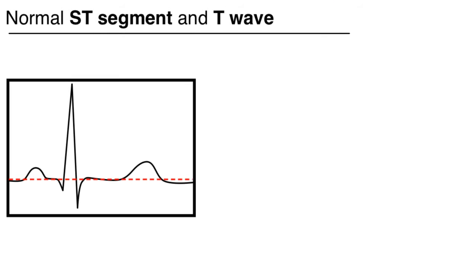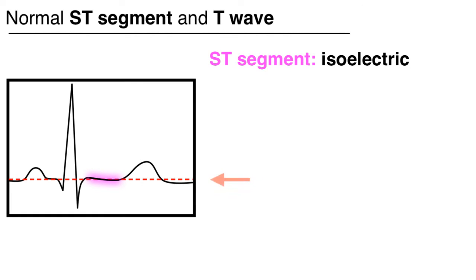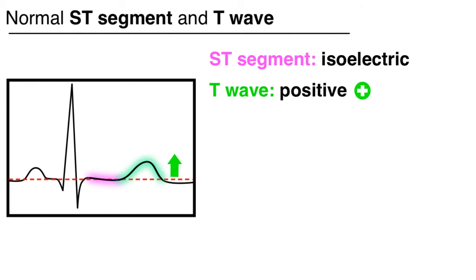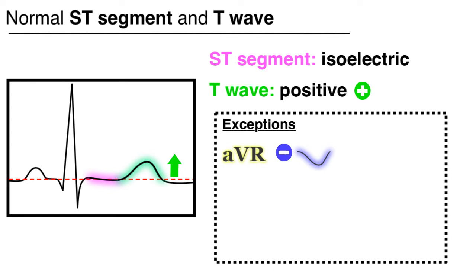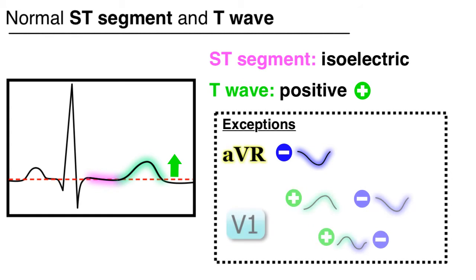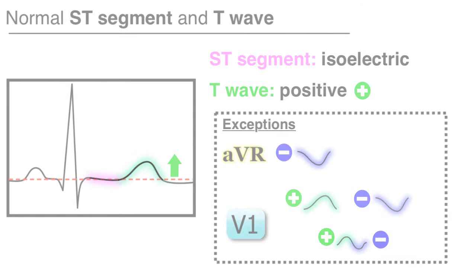Remember that normally, ST segments are usually isoelectric and the T wave is normally positive in all leads except AVR where it is negative, and in lead V1 where it may be positive, negative, or biphasic.